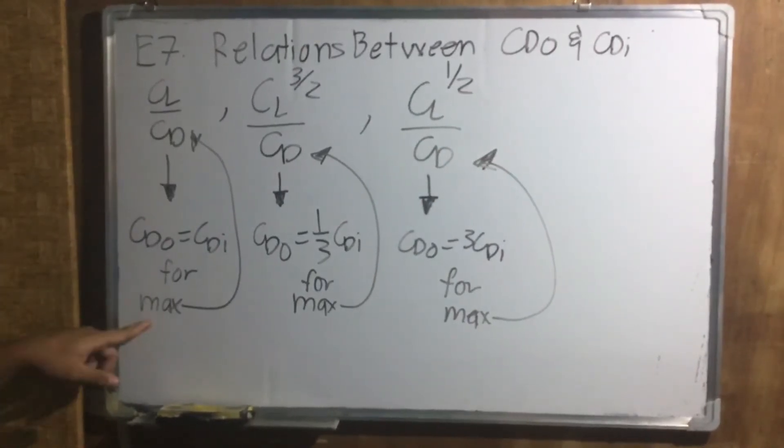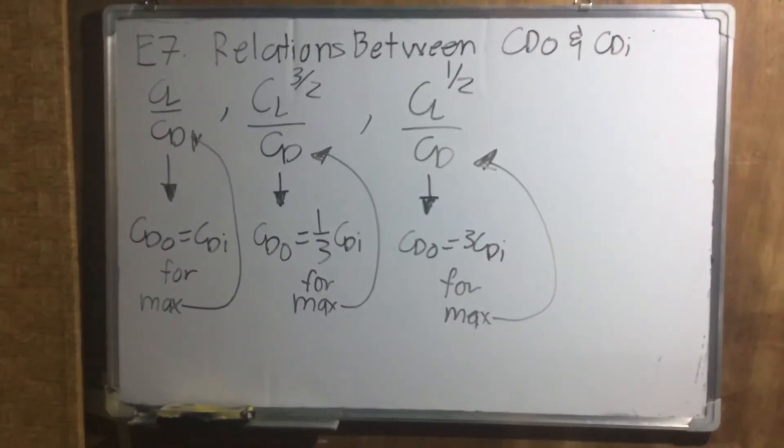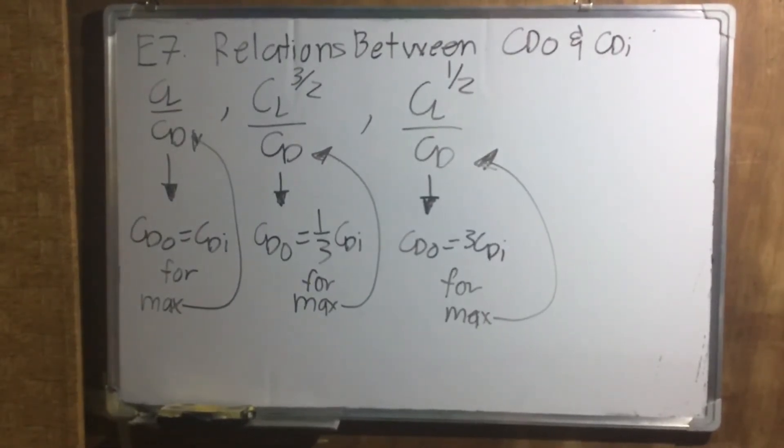When CL over CD is maximum, CDO is equals to CDI. And when maximum CL three halves over CD, CDO is equals to one third of CDI. And last, when maximum CL raised to one half over CD, CDO is equal to triple of CDI.